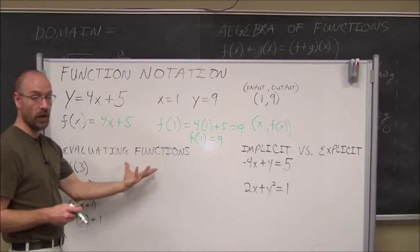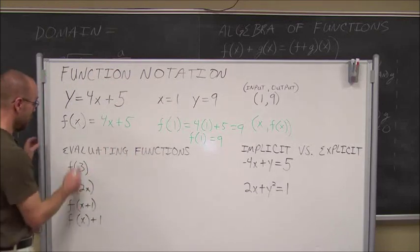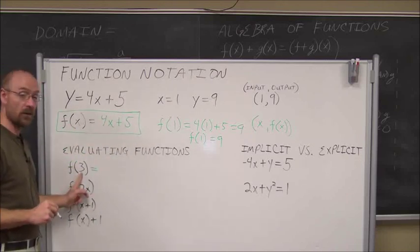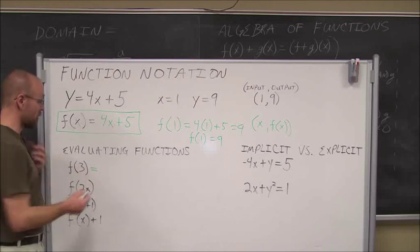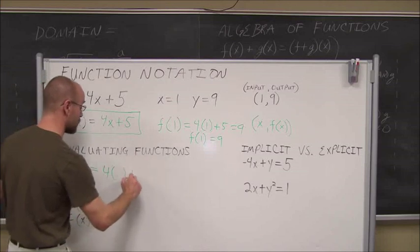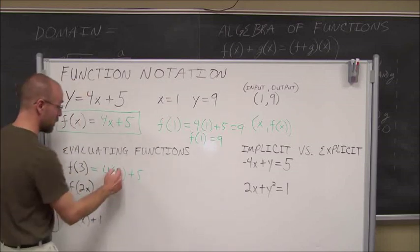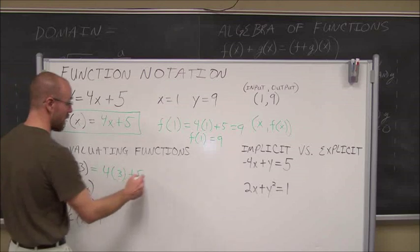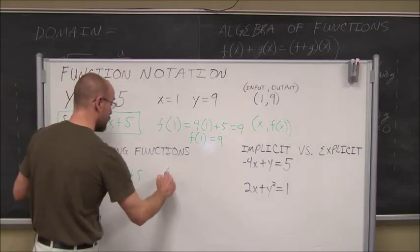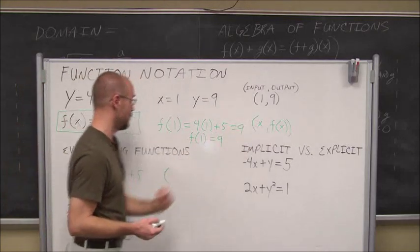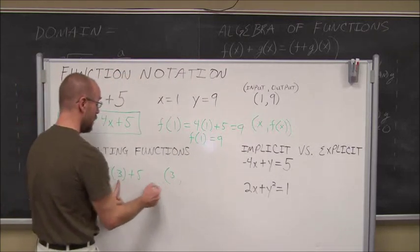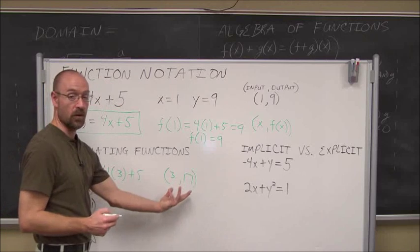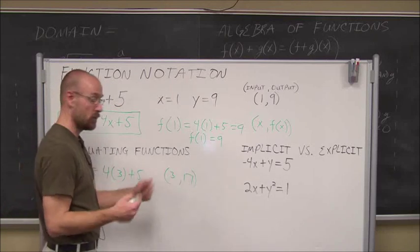Let's take a look at evaluating functions using function notation. For f of 3, I take the function 4x plus 5 and replace x with 3. 4 times 3 is 12, plus 5 is 17. I can write it as an ordered pair (x, f(x)), which is (3, 17). For f of 2x, I replace x with 2x, so I have 4 times 2x plus 5, which simplifies to 8x plus 5. Our input is 2x and output is 8x plus 5.